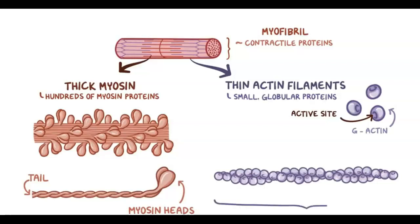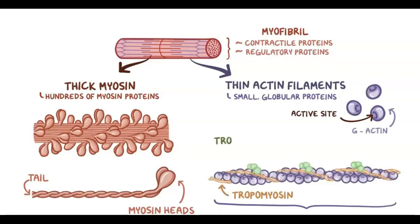This entire filament is called F-actin. F-actin is associated with two regulatory proteins, tropomyosin and troponin. Tropomyosin is a string-like protein that wraps around F-actin, covering its active sites so that the myosin heads can't bind to it.